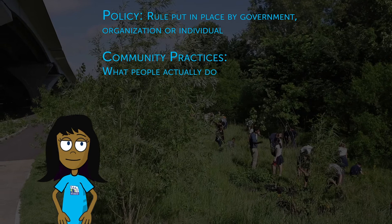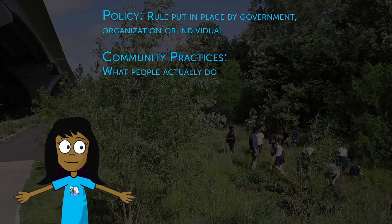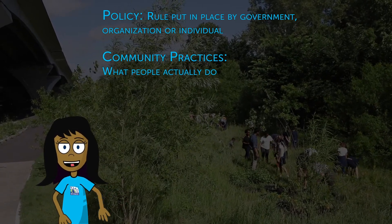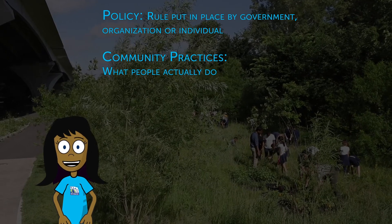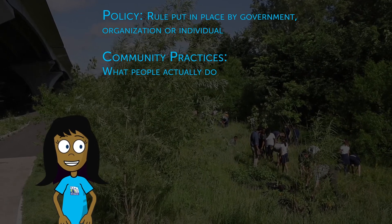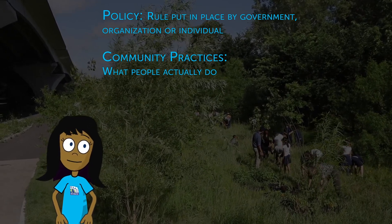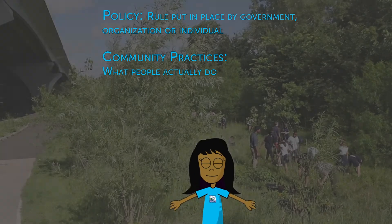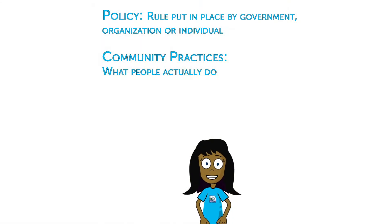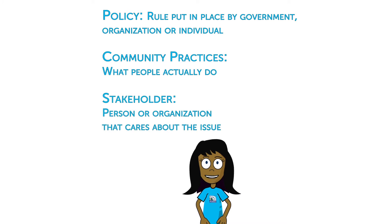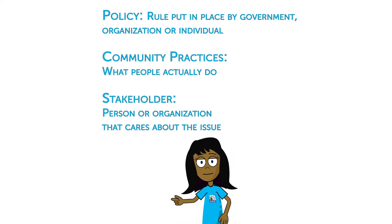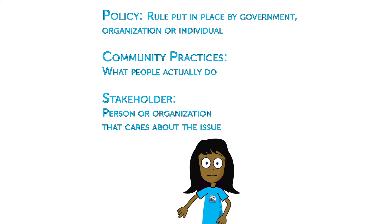Community practices are what people actually do. For example, people tend to drive 45 miles per hour on Main Street. Community members may or may not follow policies — that is something that should be investigated during the research process. A stakeholder is a person or organization that cares about this issue in some way. Their opinion may agree or disagree with your group, and that's okay.